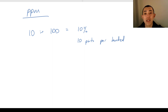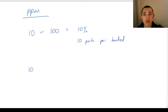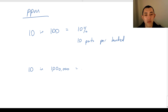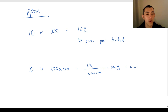Parts per million is a very similar concept applied when percentages might be a little bit unwieldy. So if you had 10 in 1 million people be sick, we could certainly compute a percentage, but it just wouldn't be very easy. We could have 10 over 1 million times 100%, and if we cancel out all the zeros, that would equal 0.0001%, which is a bit tricky to use.